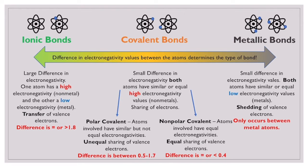Covalent bonds occur between atoms that have a very small difference in their electronegativity, but the atoms involved both have similar or equal high electronegativity values. These types of bonds tend to occur between non-metal atoms — all the atoms that have relatively high electronegativities. Because both atoms have high electronegativities and are both really good at attracting electrons and holding on to their own valence electrons, they're not going to want to give up electrons, so they're going to end up sharing electrons — they're going to compromise and share.